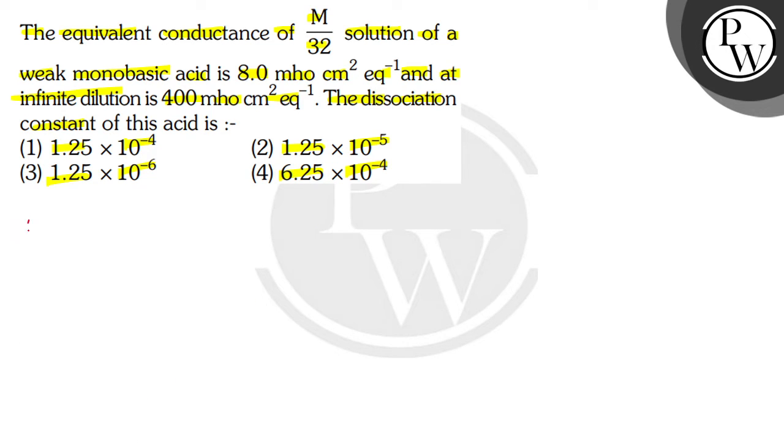The key concept used to solve this question is the dissociation constant. The dissociation constant formula is represented as Ka = Cα²/(1-α), where C equals concentration, which is given as M/32.